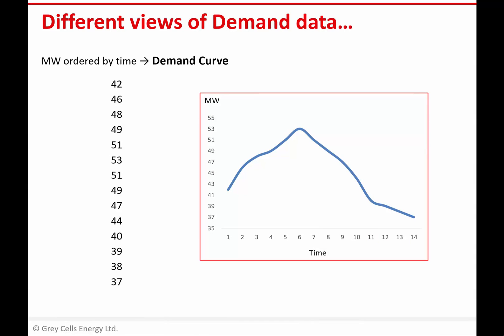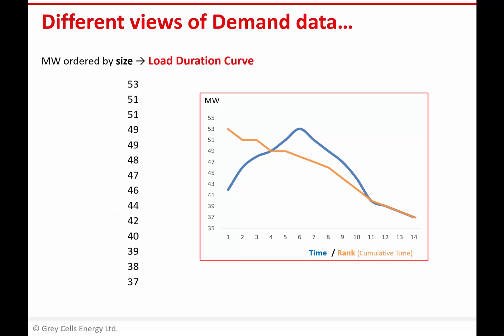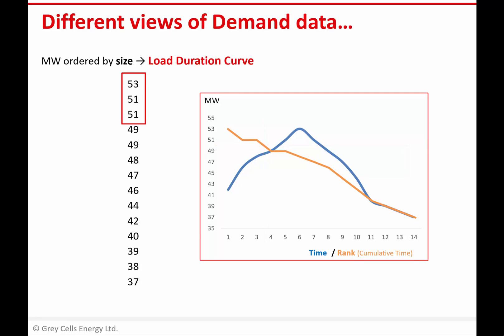There is another way of analysing that exact same data, however, which makes the task of seeing how often power is above a certain level much more straightforward. If I go back to my simple data set, another way I can plot that exact same data is to order it not by time but by size. So I've basically sorted that list so all the larger numbers are at the top and the smaller ones at the bottom, and then I'm plotting that data to produce the yellow line here. That yellow line is what we call a load duration curve. In this simple example, if I want to know how many time periods the demand was above 50 megawatts, I can read that off the chart or simply count off the number of occurrences above 50 megawatts.